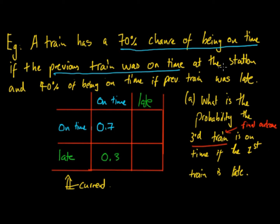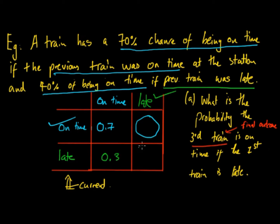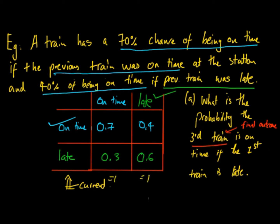Now for the late column: there's a 40% chance of being on time if the previous train was late, so we put 0.4 there. That means there's a 60% chance of being late if the previous train was late, so we put 0.6 there. Again these sum to 1, giving us the complete transition matrix: 0.7, 0.4 in the top row and 0.3, 0.6 in the bottom row.